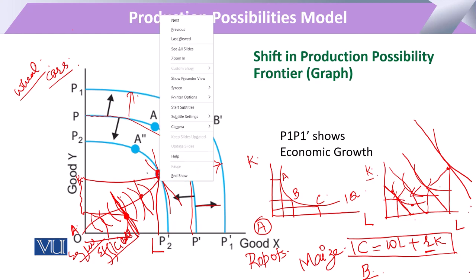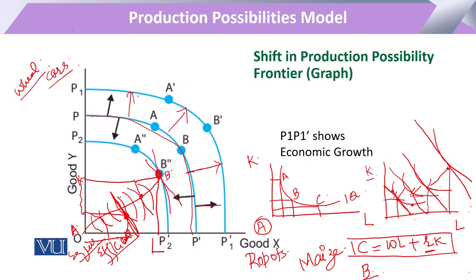When the resources or factors of production are enhanced, the total production possibility frontier will shift outward, and we will have a new Edgeworth box with expanded production possibilities. These are the various forms through which we can explain the inward or outward shifting of the production possibility frontier.